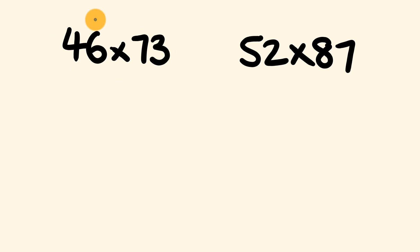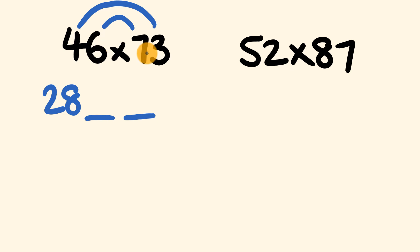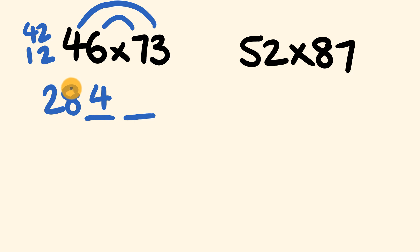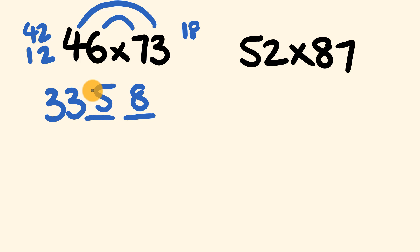Let's work through 46 multiplied by 73 with rainbow multiplication. First, 4 times 7 is 28, written with two spaces after. For the tens part: 6 times 7 is 42, and 4 times 3 is 12 — adding gives 54, so 4 goes here and we carry 5 to the 28 making it 33. Finally, 6 times 3 is 18 — the 8 goes down and we carry 1, making 4 into 5. Answer: 3358.